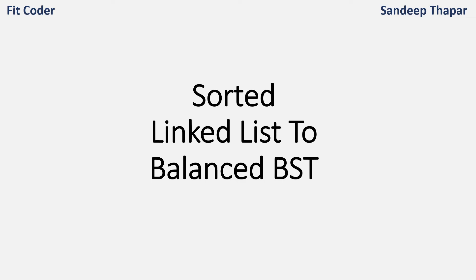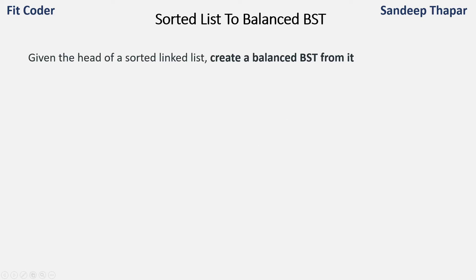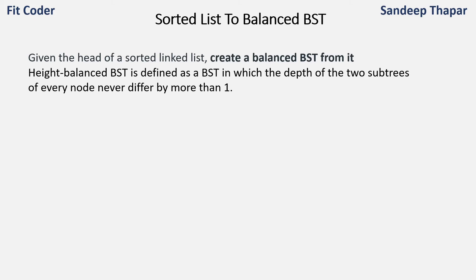Hi everyone. In this video I will discuss how to convert a sorted linked list to a balanced binary search tree. We are given the head of a sorted linked list and we need to create a balanced BST from it. A balanced or height-balanced BST is a tree in which the depth of the two subtrees of every node differ by at most 1. So the difference between the height of the left subtree and the right subtree is maximum 1, and that property must be true for every node.